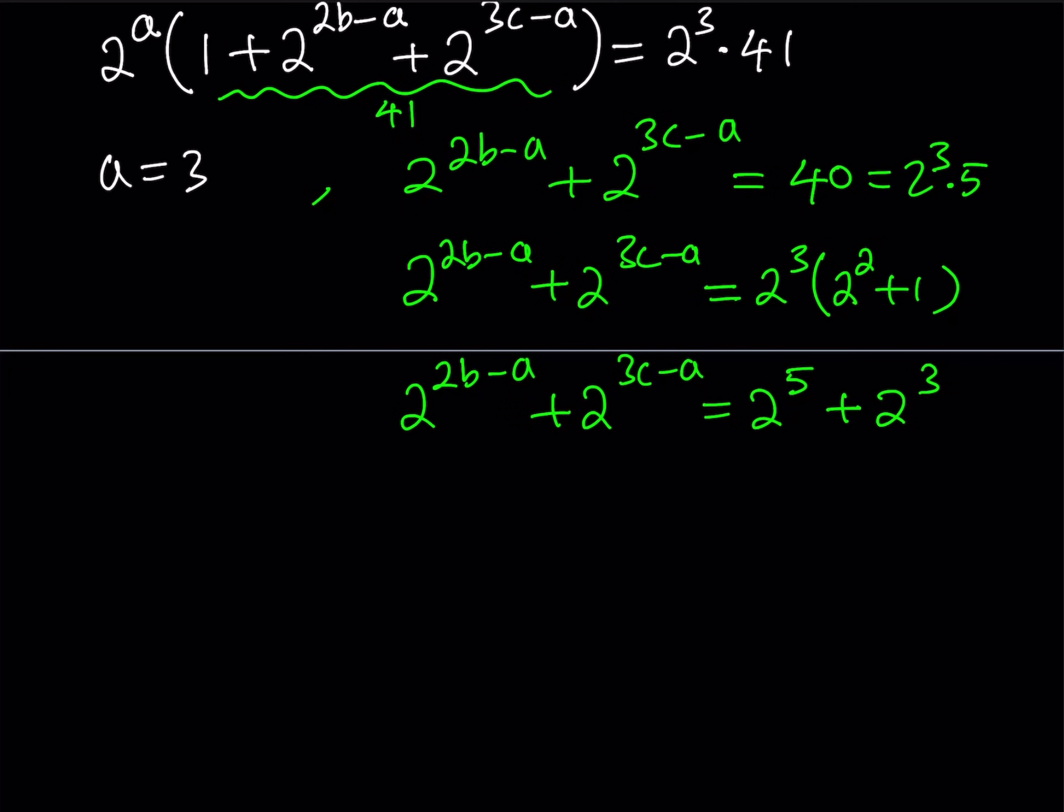And if you write it as 2 squared plus 1 and distribute the 2 to the 3rd, you're basically going to be getting what you need. That is being able to write it as a sum of powers of 2. So from here, we get 2 to the 5th power plus 2 to the 3rd power. So this is a really nice equation because a, b, c are integers, and I already have a value for a. And we're going to look into other values of a, if possible.